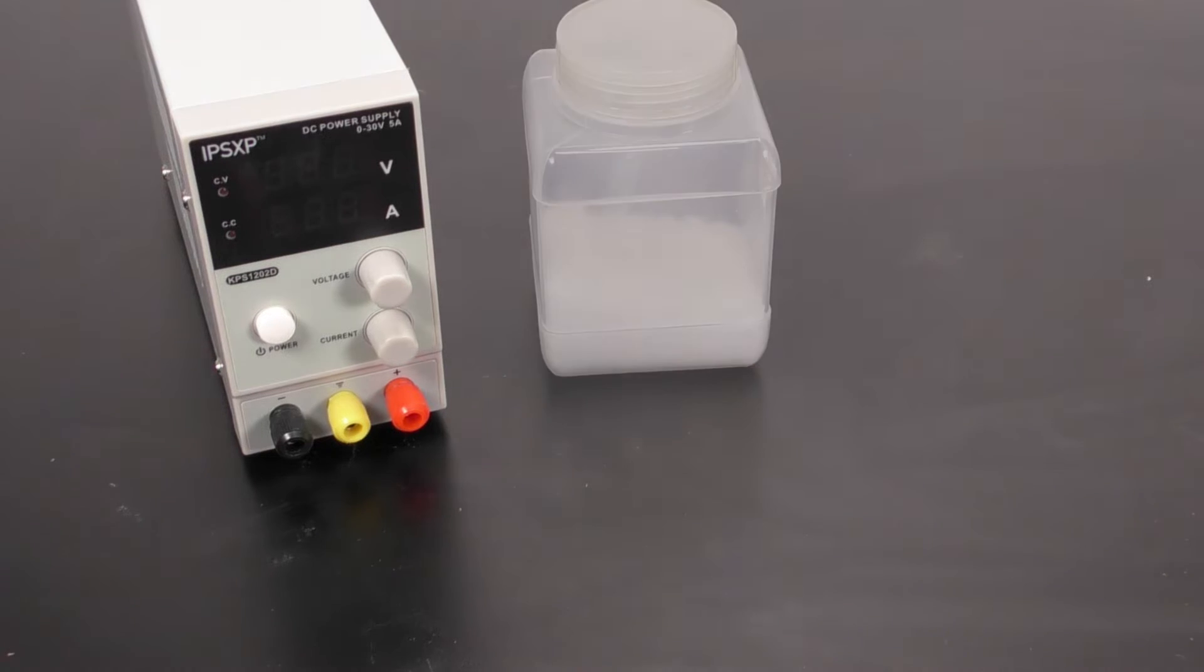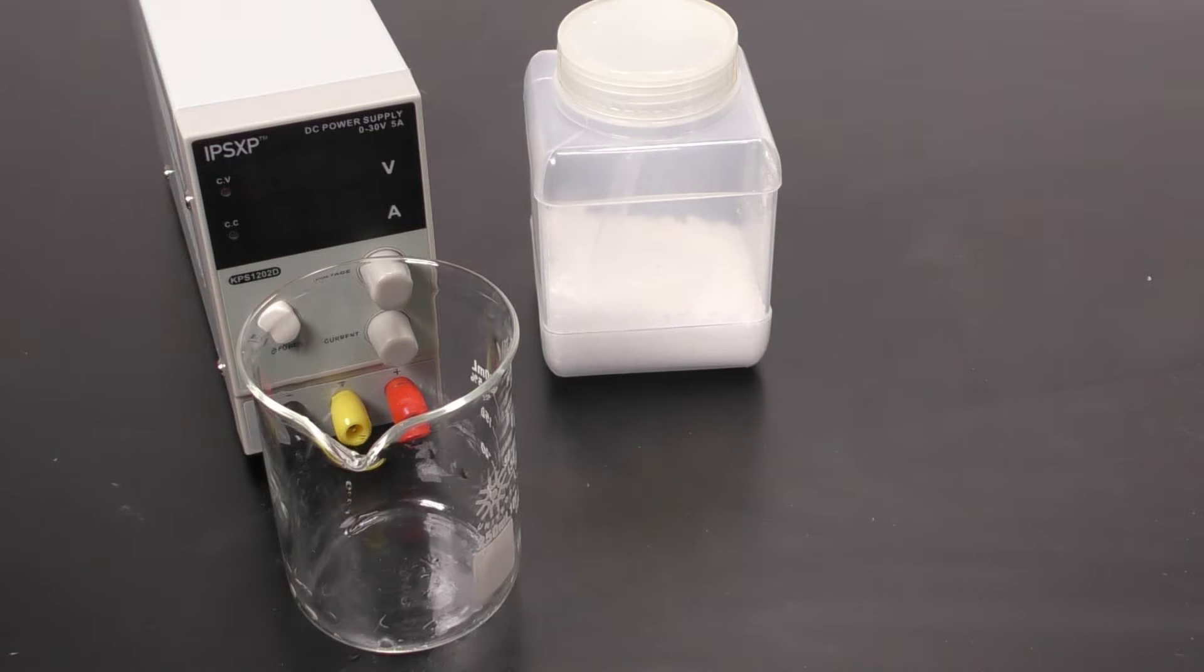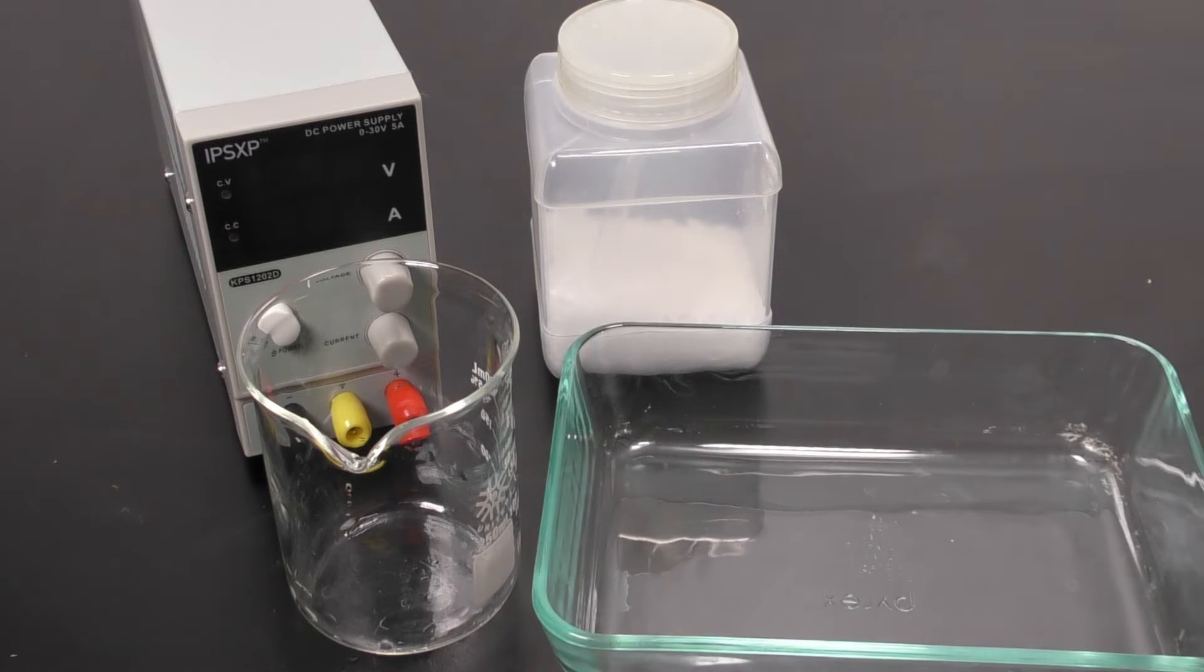You will also need some other materials to perform this experiment. You will need a DC power supply that can do 6 to 10 volts, a water additive such as 5% sulfuric acid or just salt. You will also need a small beaker to fill the test tubes with water and maybe an additional tray to place under the beaker as you first set up the experiment.